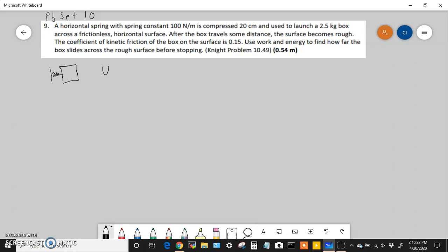So the potential energy stored in the spring, Us, is one half k delta x squared, where delta x is how much the spring was compressed or stretched. In this case it's compressed. So that's the amount of energy you have initially.